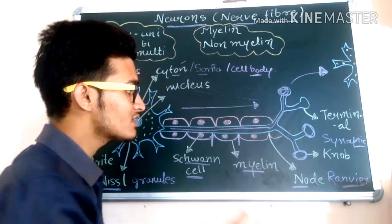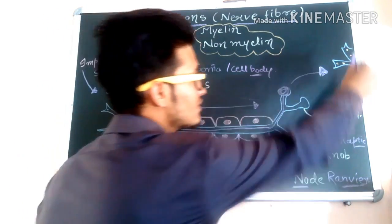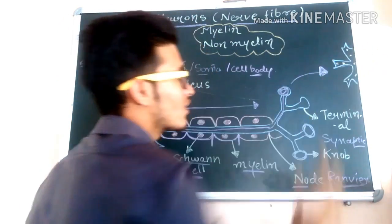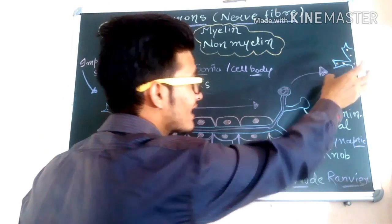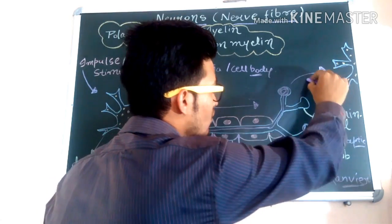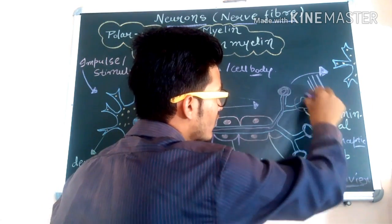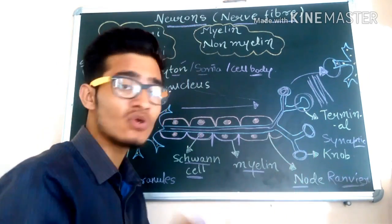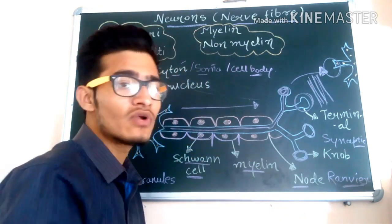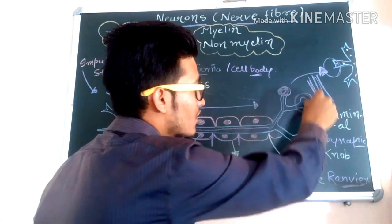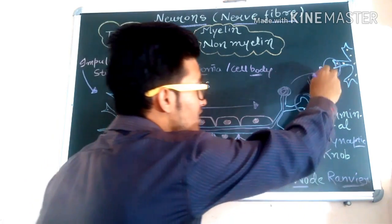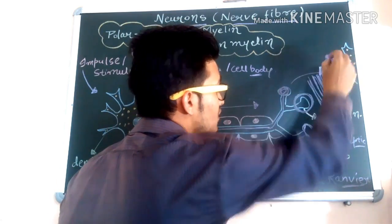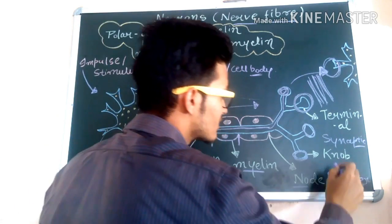Why is it known as the synaptic knob? Because there are different kinds of neurons present after it. You can see that these are the dendrites of a particular neuron, and here is the cytone. The gap between the axon of one nerve fiber and the dendrite of another nerve fiber is known as a synapse. That particular gap is known as synapse, and therefore this particular knob is known as the synaptic knob.